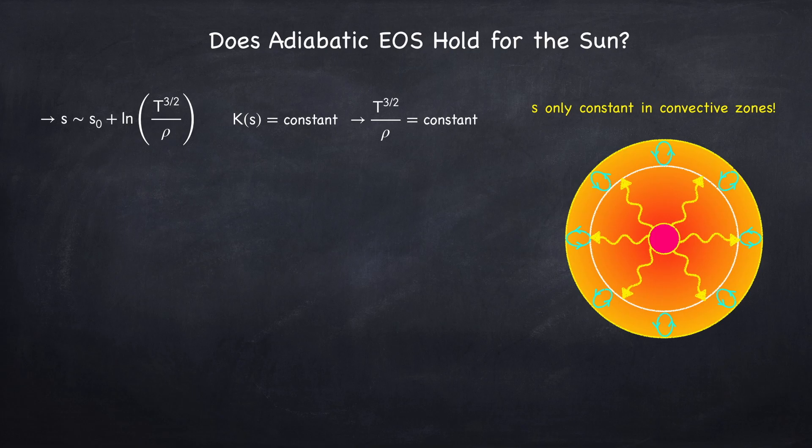But in the case of the sun, entropy is not constant throughout the sun, and so the adiabatic equation of state does not hold. So that means we have to calculate the binding energy for a non-adiabatic equation of state, so we'll take gamma instead of gamma1, meaning we'll allow for heat flow. Gamma, for all stars, is 4 thirds. We found this in stellar physics 3b.